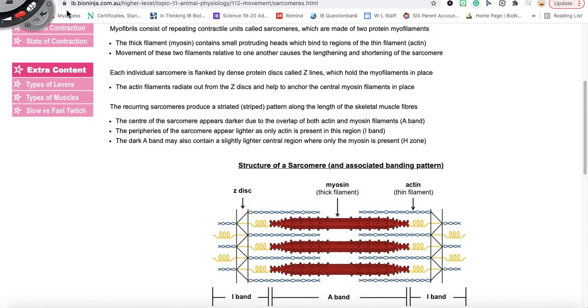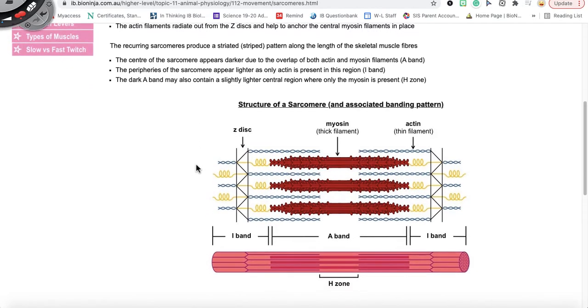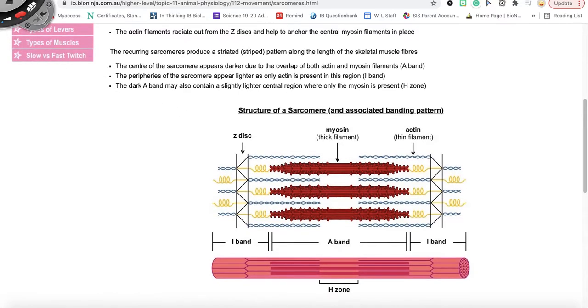All right, now if you were to look at the sarcomere under the microscope this is what you would see. The center of the sarcomere appears darker due to the overlap of the actin and the myosin, and we call this overlap of the actin and myosin the A band.